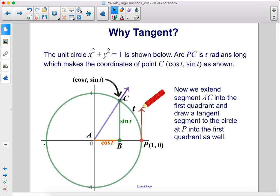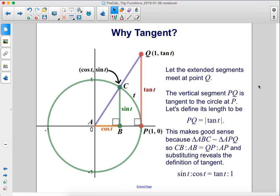Now we extend segment AC into the first quadrant and draw a tangent segment to the circle at P into the first quadrant as well. Let the extended segments meet at point Q. The vertical segment PQ is tangent to the circle at P. Let's define this length to be the absolute value of tan t.